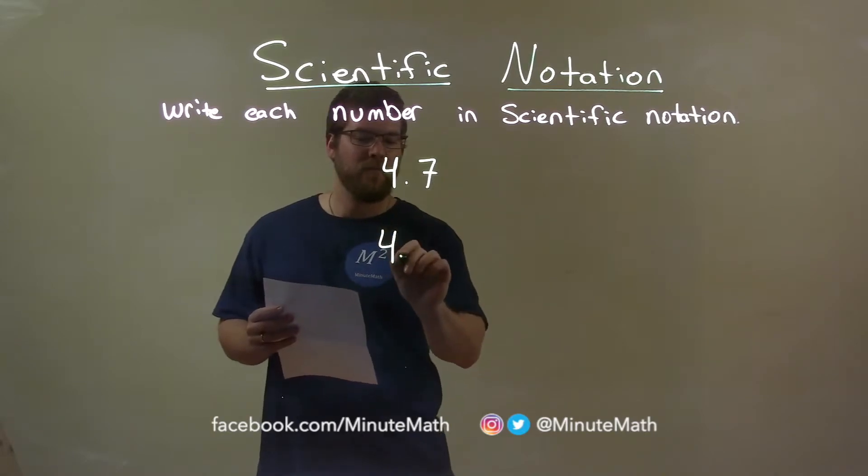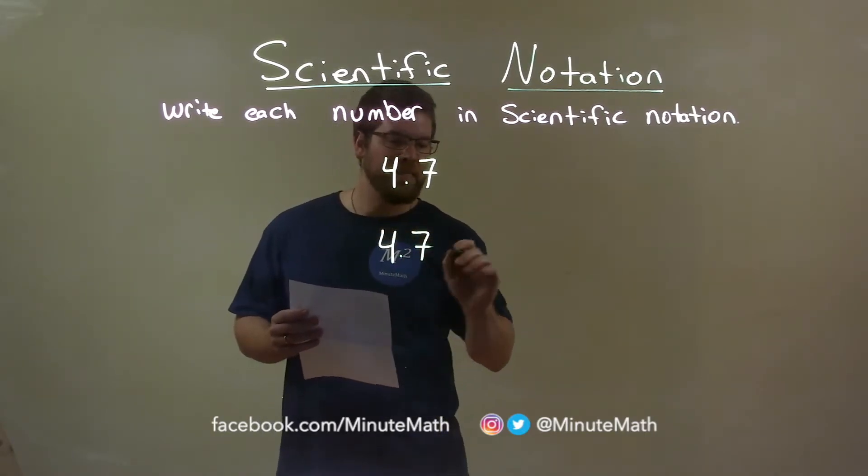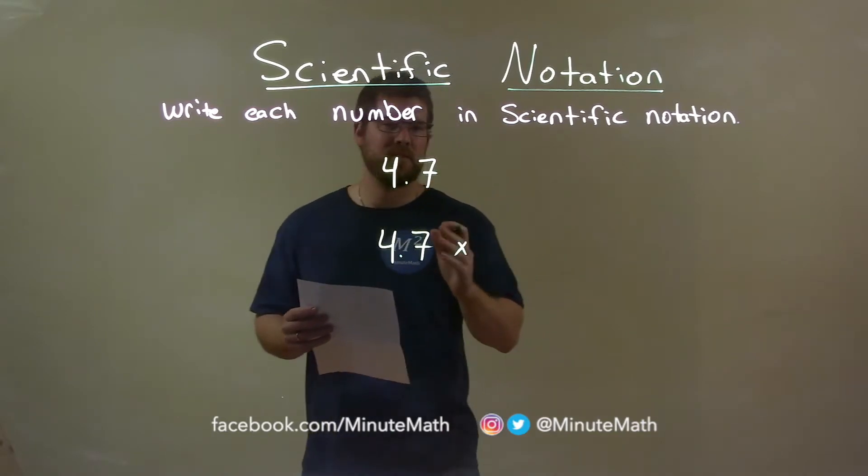So, we're going to bring down that 4.7, nothing I do there. Now, how would I write this so it's the same?